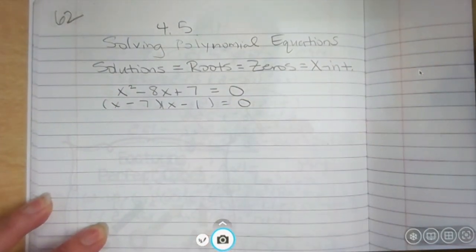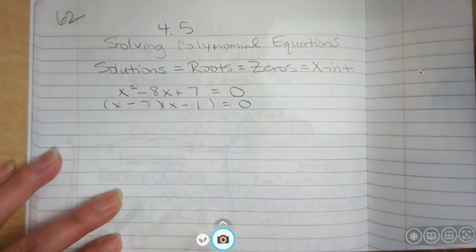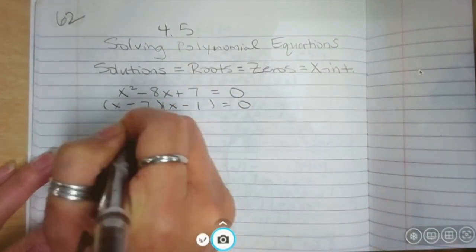Okay, double bubble, right? Go ahead. Okay, so what are my solutions? Seven and one. What does that mean? My solutions are seven and one.